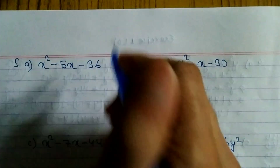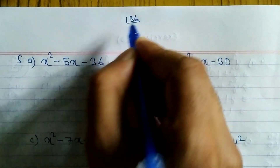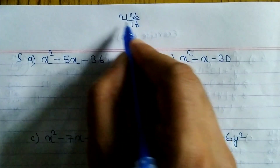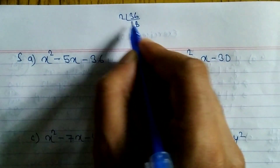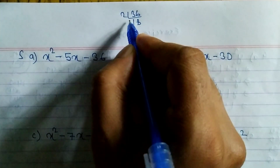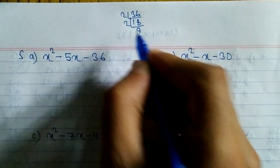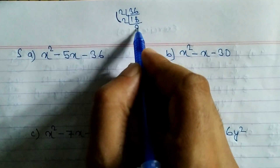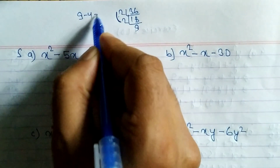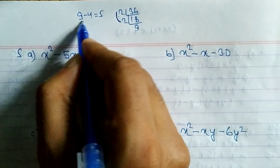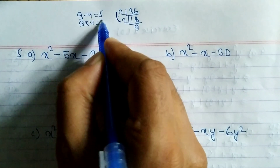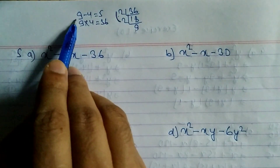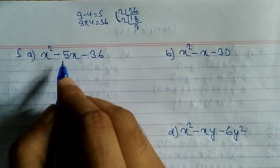First, let's try factors of 36. Two eights are 16, subtract to get 14 — not 5. Try 9 and 4: 9 minus 4 equals 5, and 9 into 4 equals 36. So the factors are 9 and 4.